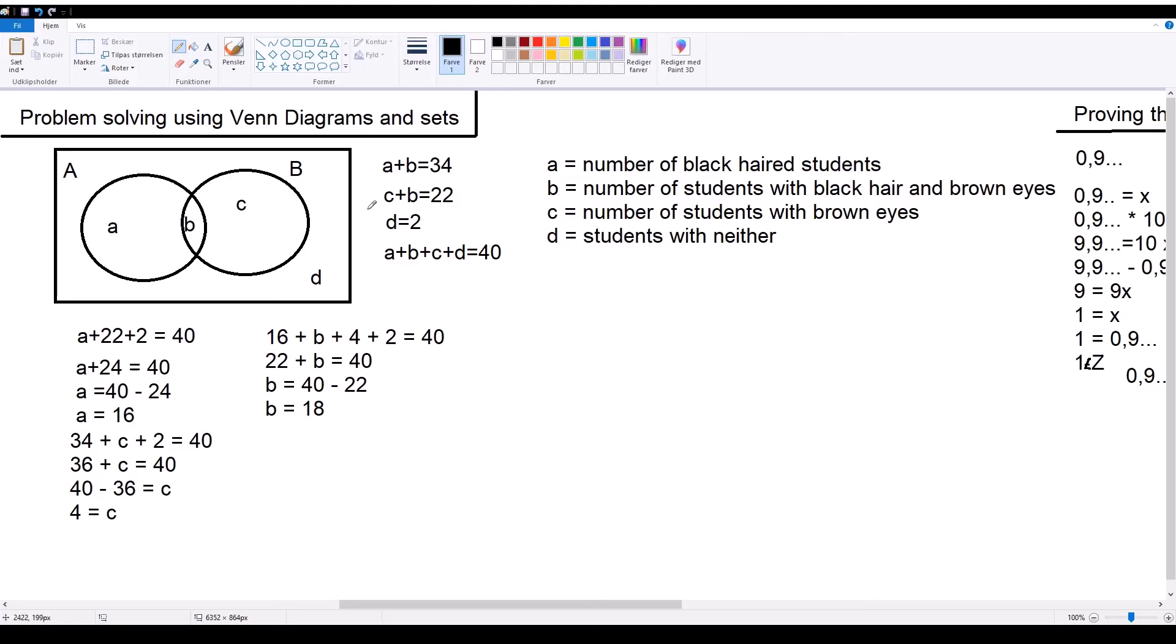We know that there's 40 students in the class, so we can use this to find out how many students have specifically only black hair and brown eyes, and only brown eyes. We can start over here by trying to isolate A. We know that C plus B equals 22, so we can take the formula used here and substitute C plus B for 22 and substitute D for 2. That means you have A plus 22 plus 2 equals 40. We reduce that to A plus 24 equals 40, and then we isolate A, so it says 40 minus 24 equals A, and that means A equals 16. We do the same for all the other values, and then we end up with 16 students have black hair, 18 students have black hair and brown eyes, and 4 students have neither.